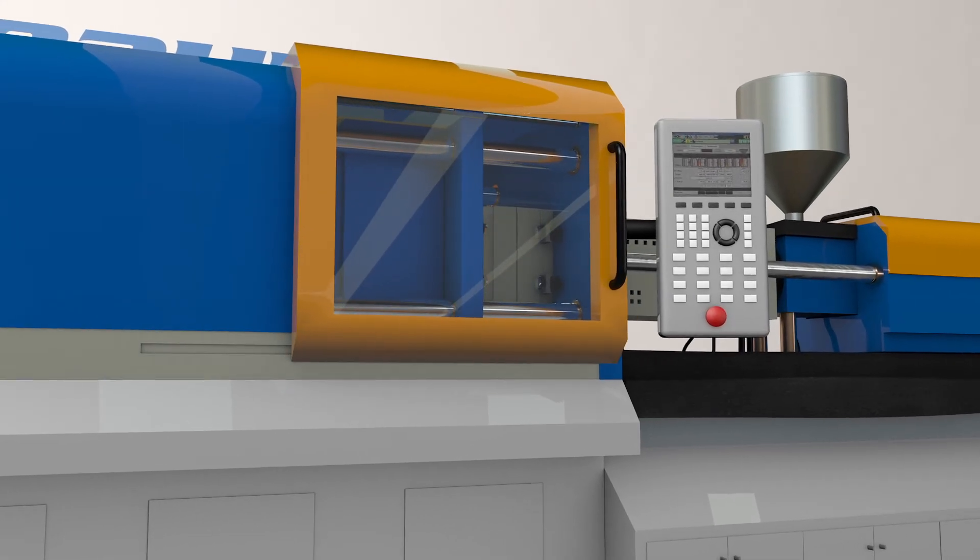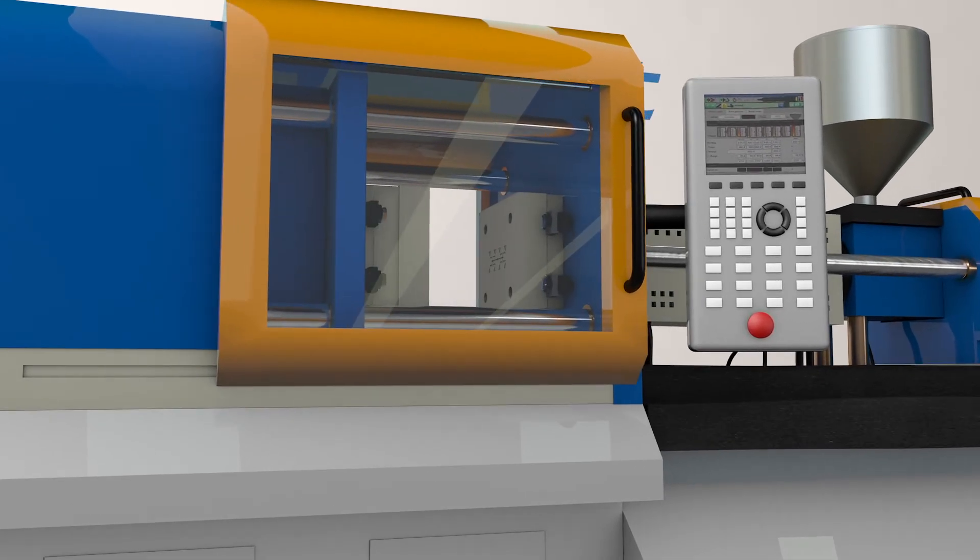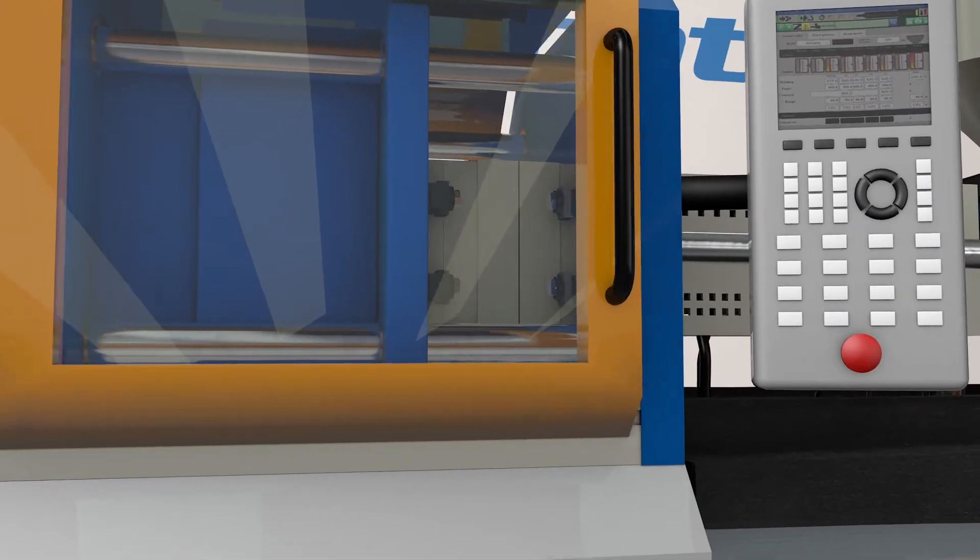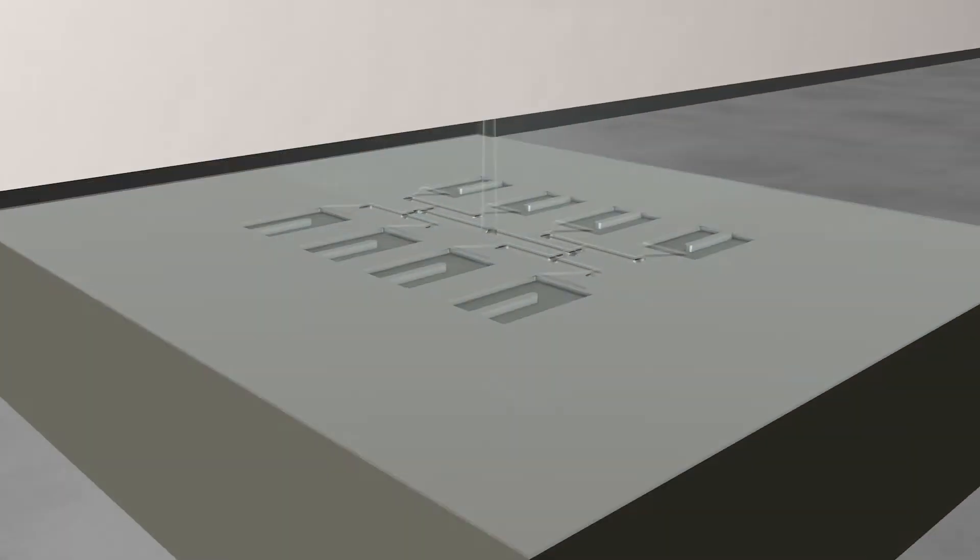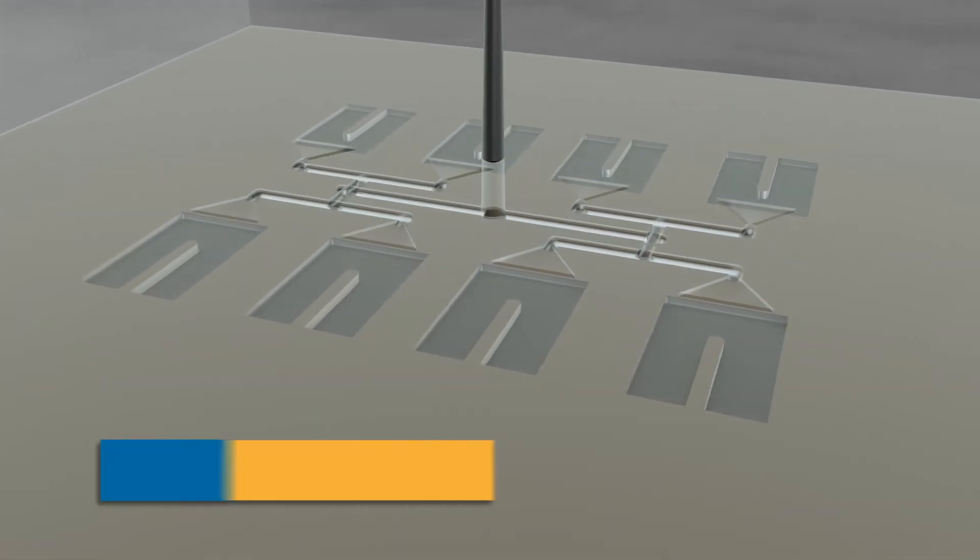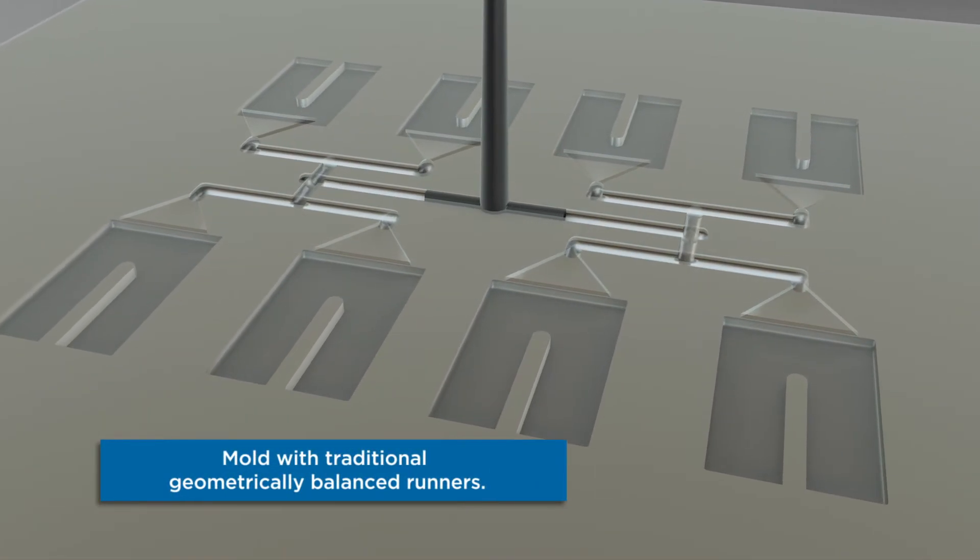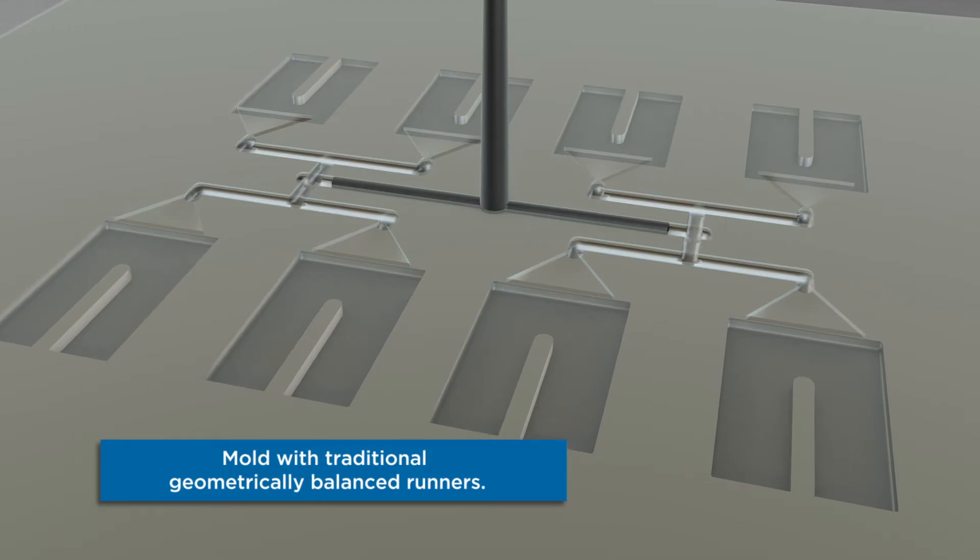To understand why this happens let's take a closer look at what's going on inside the mold. Watch as the plastic flows through the runner system and into the cavities. In this traditional geometrically balanced runner system you can see the plastic melt is not filling each cavity at the same time.